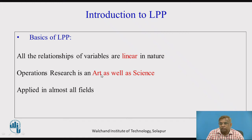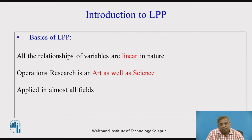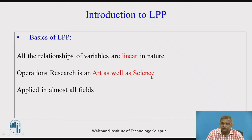But once you take up a particular mathematical model of these relationships, then for that mathematical model — mathematics being a perfect science — for a particular model, a particular mathematical set of relationships that we come up with, the solution has to be unique across the globe. In that sense, it is a science.